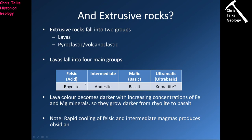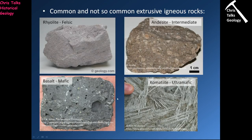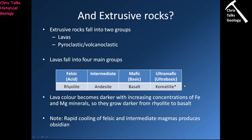That's the first way we classify extrusive igneous rocks — we simply look at the colour. We have rhyolite, which is felsic; andesite, which is intermediate; basalt, which is mafic; and komatiite, which is ultramafic. You'll notice komatiite has a little asterisk next to it, because komatiites aren't formed anymore — they're not erupted on the surface of the Earth. The last time komatiites were really erupted was all the way back in the Precambrian.